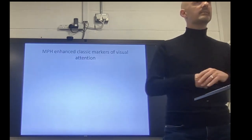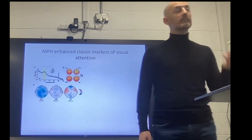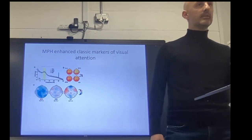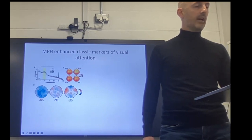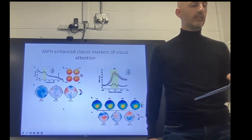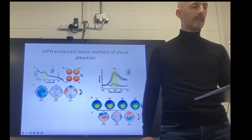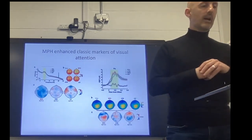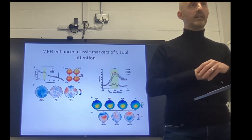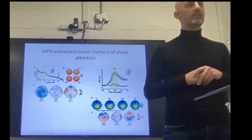We replicated the methylphenidate effects on the classic markers of attention. Methylphenidate decreased the alpha rhythm — suppressed posterior alpha — and the classic marker of attention, the parietal P3, was again increased in amplitude by methylphenidate relative to placebo. However, there was no difference in either alpha or the P3 for the atomoxetine or citalopram conditions. So neither of these signals could explain the drop in performance in those two drug conditions.